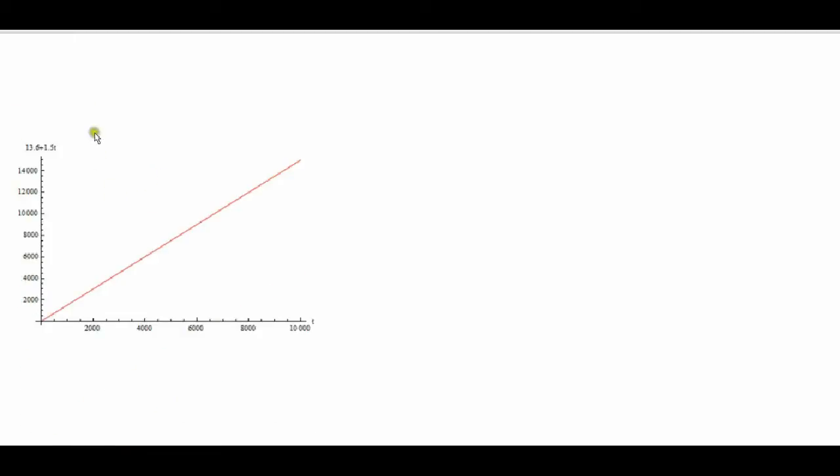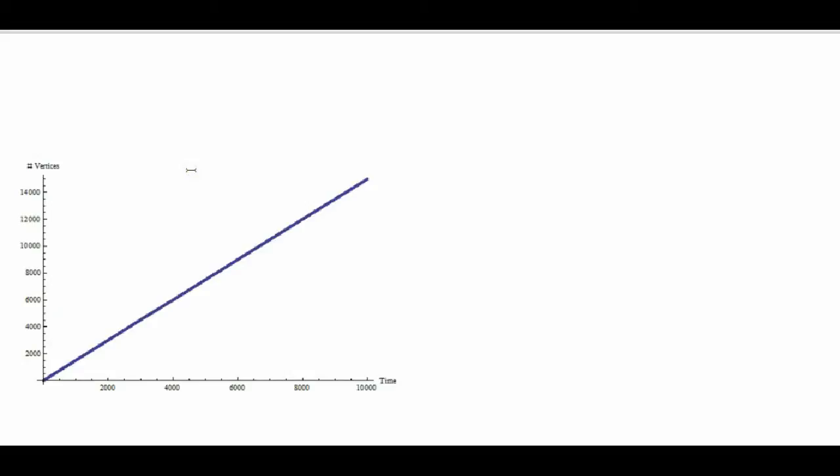Well, this is the best fit curve, roughly. Actually, if the x-axis is denoted by t, t for time, then there should be about 13.6 plus 1.5 times t vertices on time step t. That's what this red line here, this is like a best fit curve. But it's not an exact fit with the data.